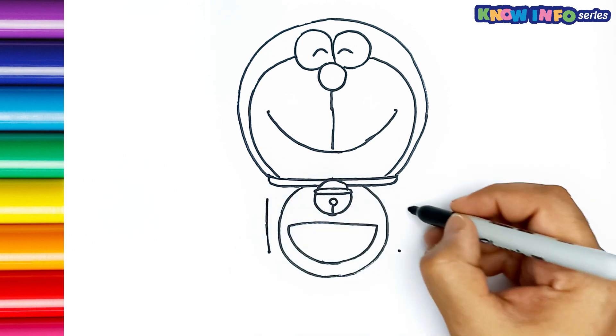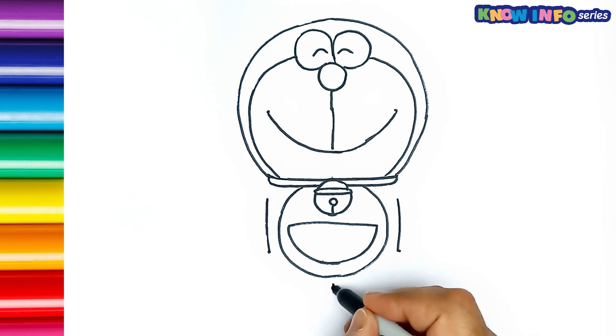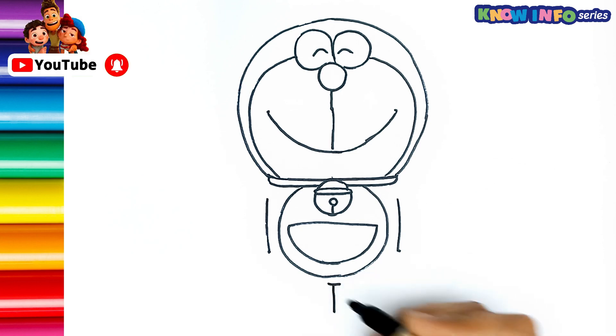Now, with the help of the lower right and left dots, make the arms and the rest of the body.